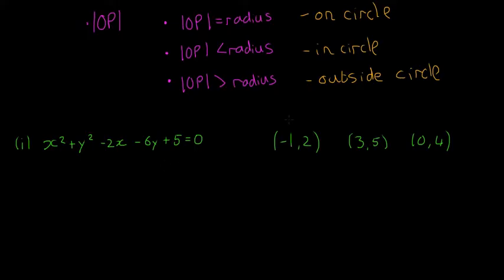We have three points. Point A is (−1, 2), point B is (3, 5), and point C is (0, 4). We need to find out if these points are inside the circle, outside the circle, or on the circle.